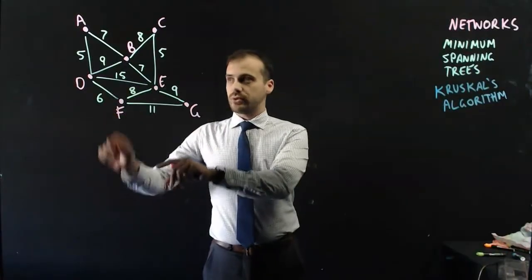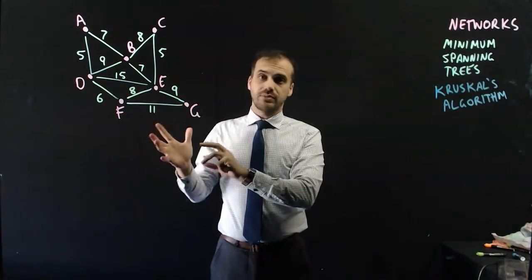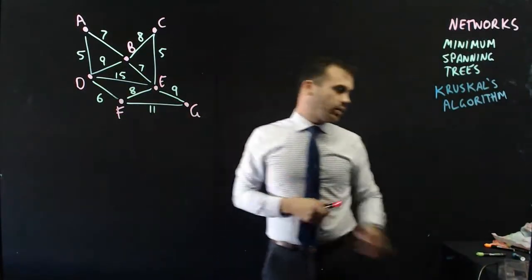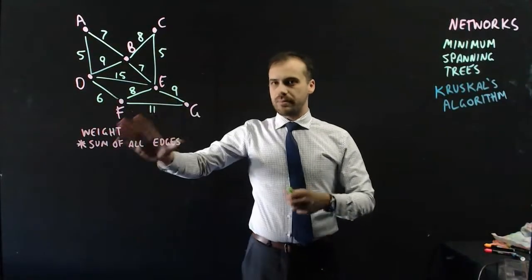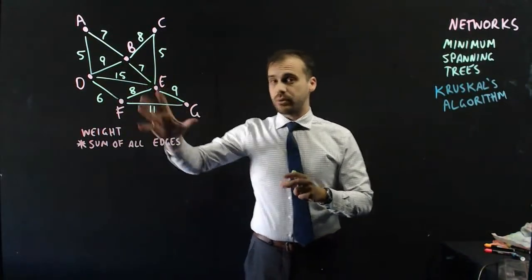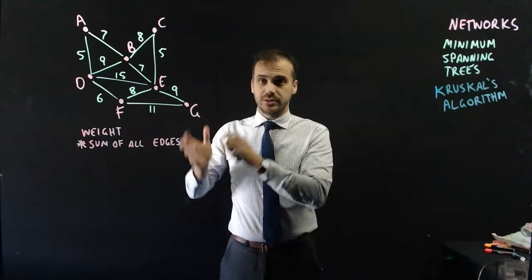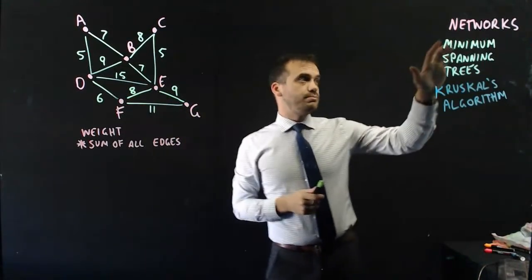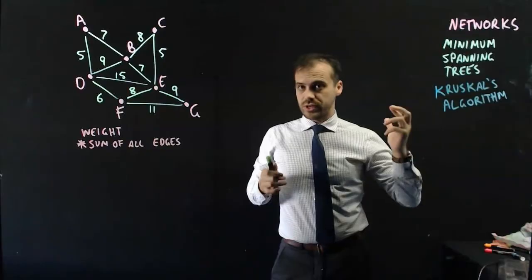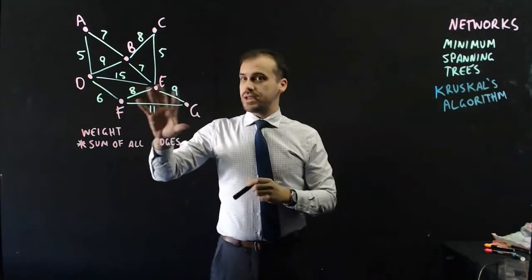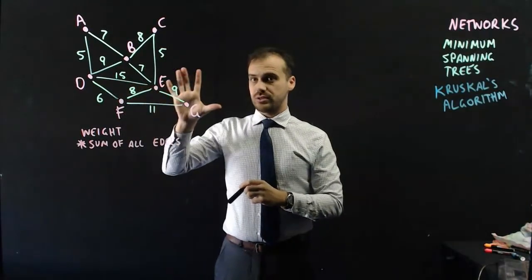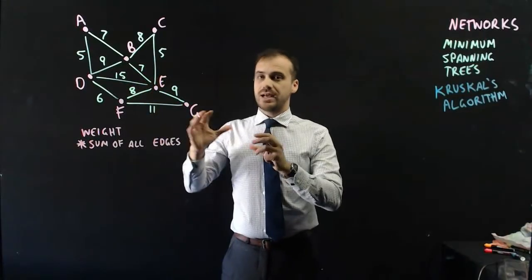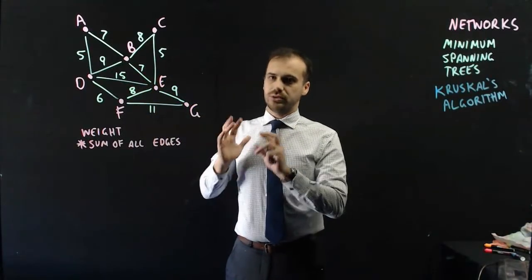Alright, so we have a weighted network here, and you can see all of these numbers on all of these edges. Now, if we add all of those numbers up, we'll have something called the total weight of the graph. I'm not going to bother adding all of them up, but if I was to add them all up, I would know the total weight of that graph. Now, a minimum spanning tree, which is what this video is about, is creating a tree of this graph that has the lowest possible weight.